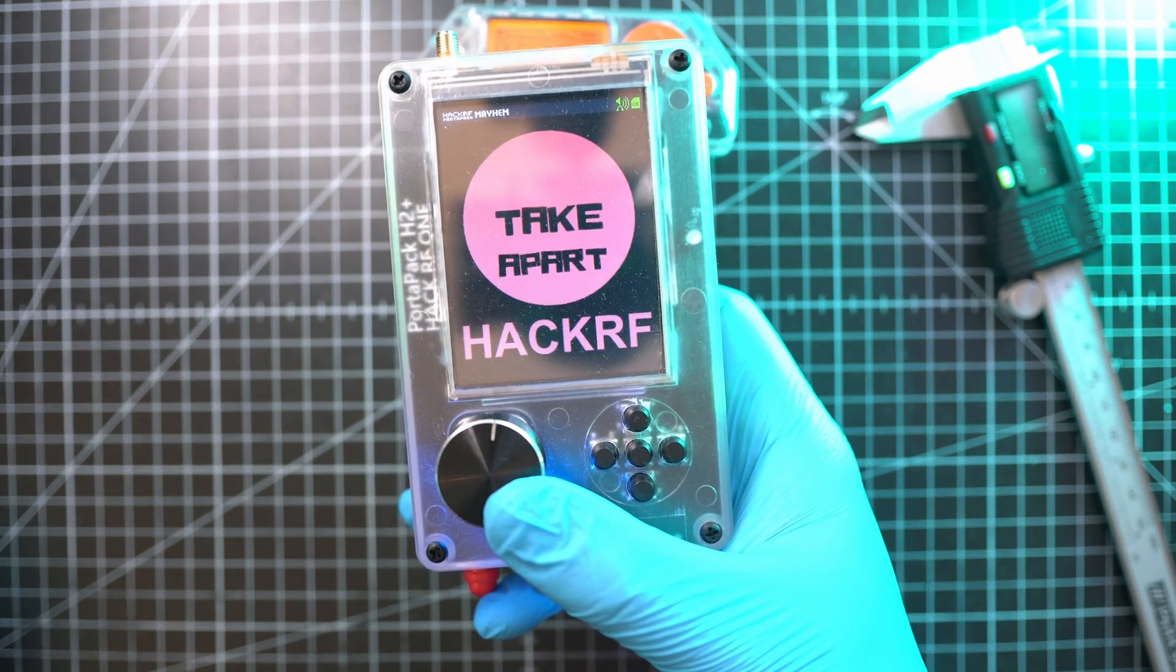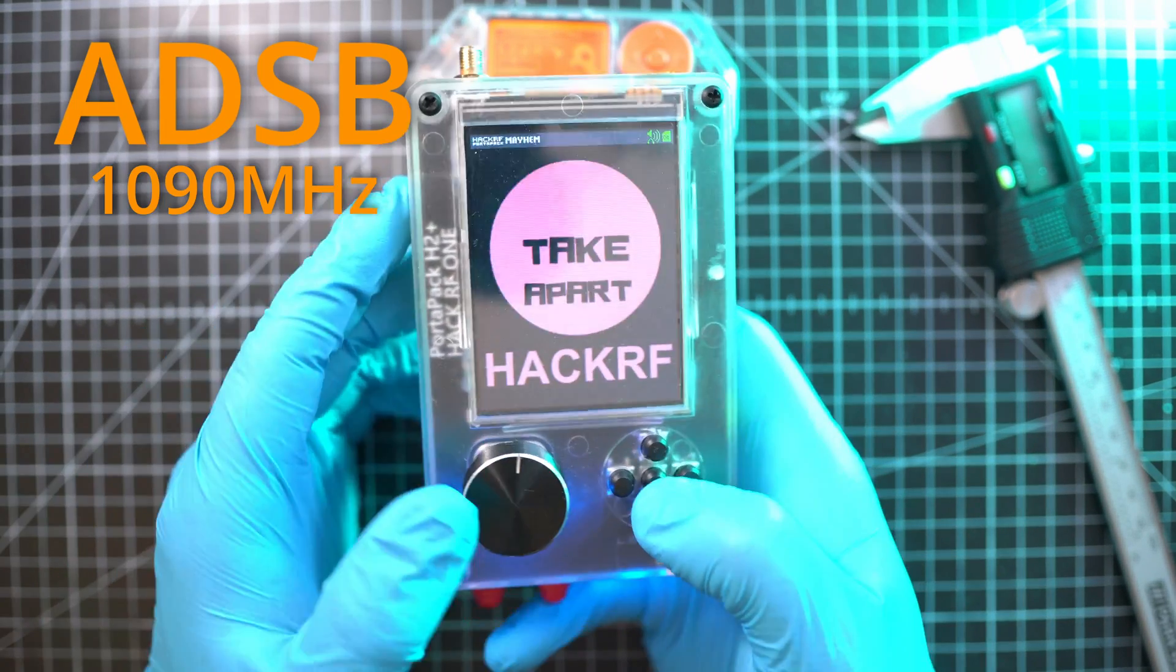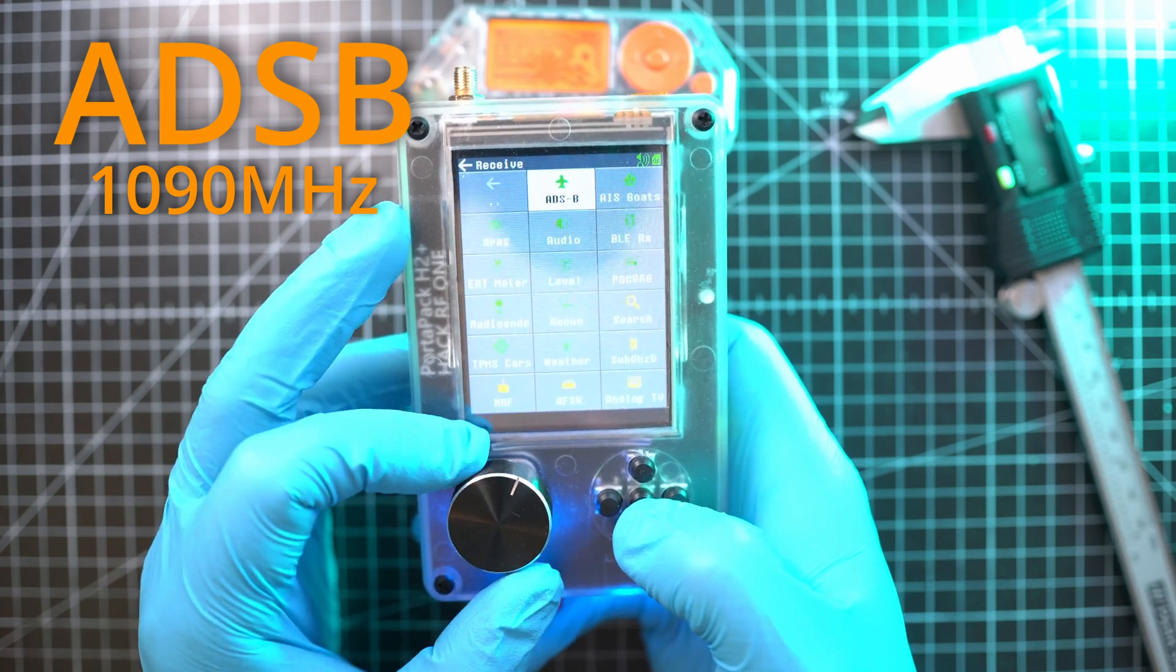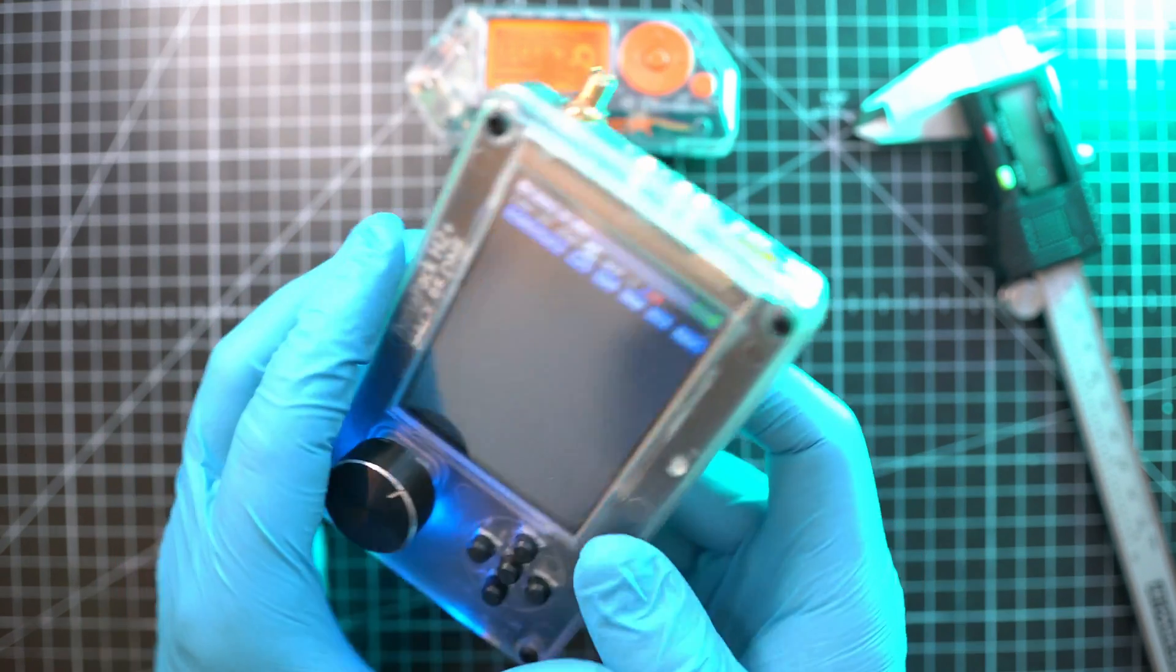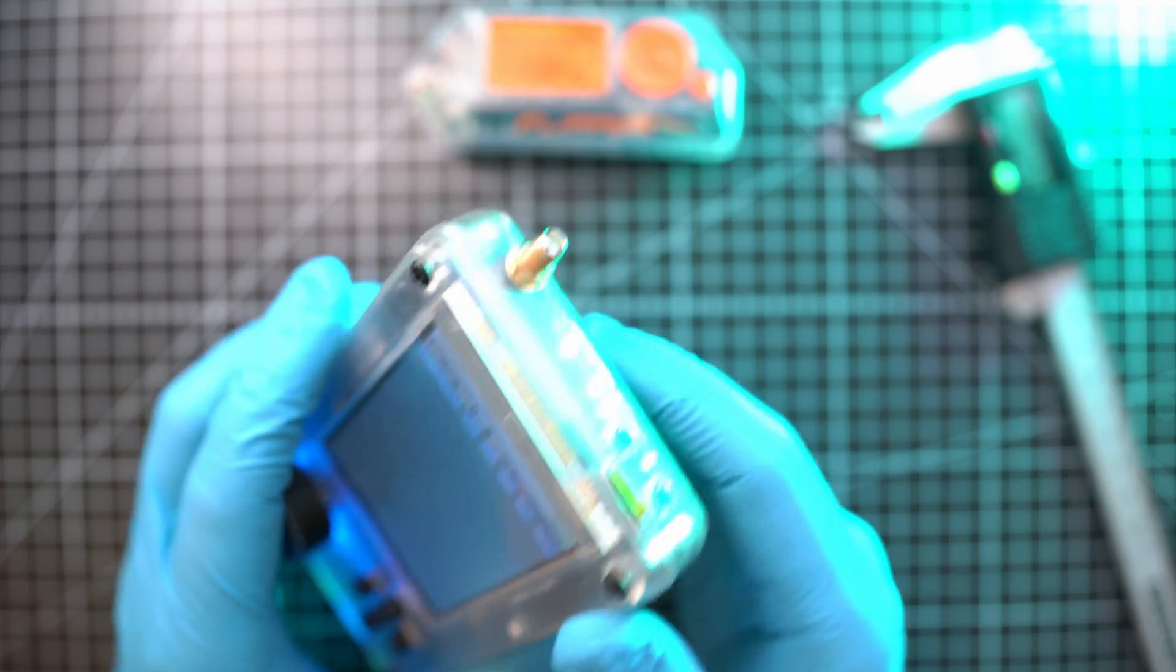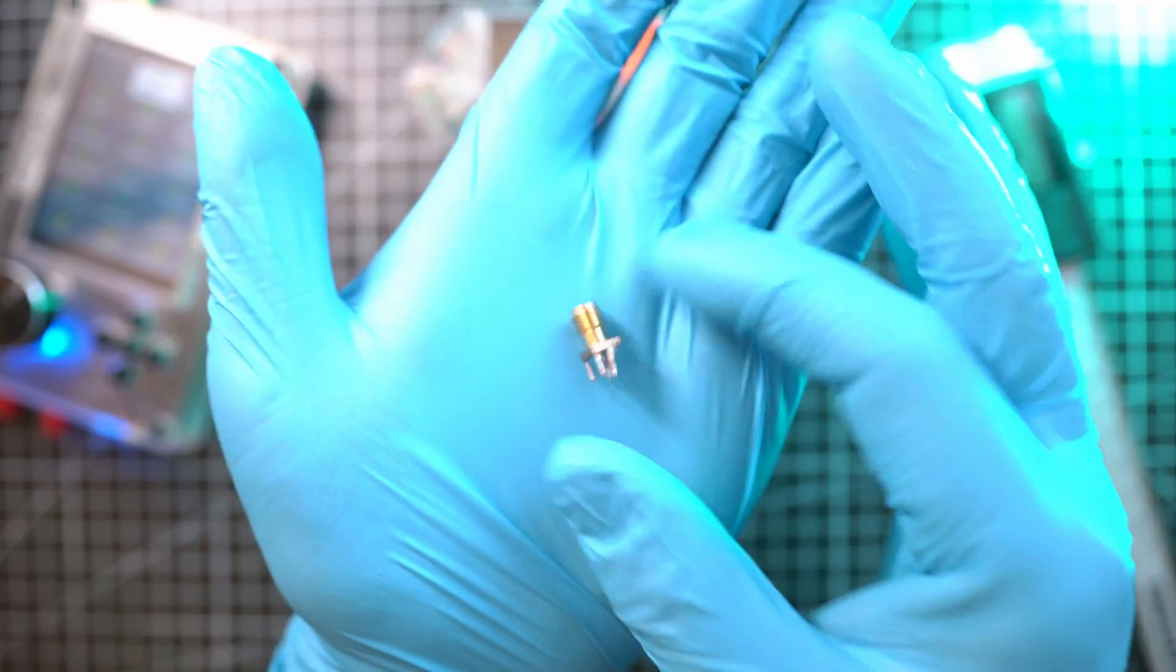Alright folks, I had this idea to create the cheapest ADS-B antenna for my Hecar F1 Portapack H2 Plus. The antenna will be for SMA connector, well this exact one.